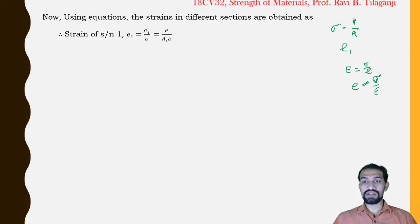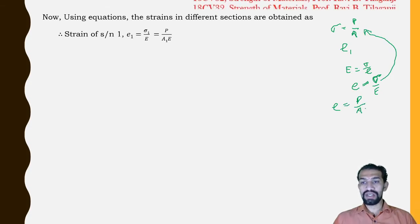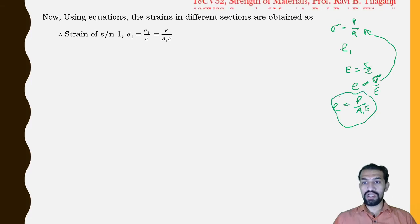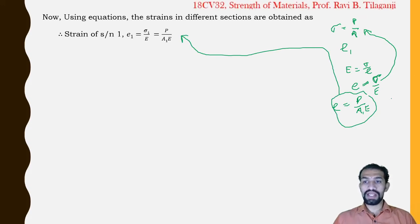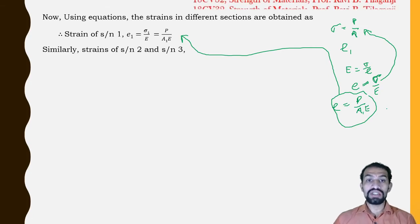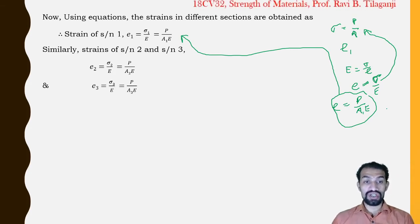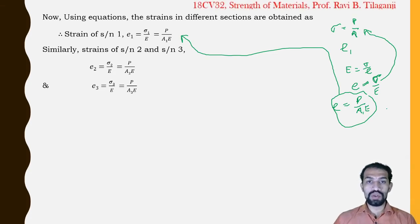Substituting σ = P/A into the strain formula: strain ε1 = P/(A1·E), where A1 is the area and E is in the denominator. Similarly, strain in section 2: ε2 = P/(A2·E), and strain in section 3: ε3 = P/(A3·E).